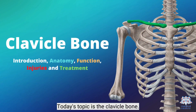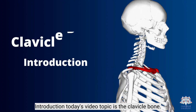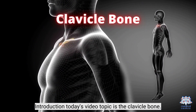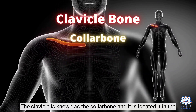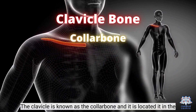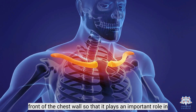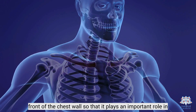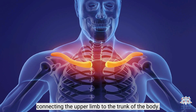Today's topic is the clavicle bone. The clavicle is known as the collar bone and it is located in the front of the chest wall, where it plays an important role in connecting the upper limb to the trunk of the body.